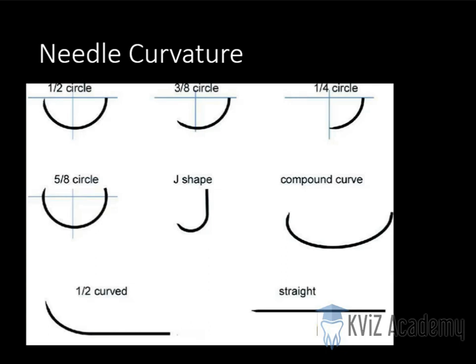I will show you first the types of curvature we have. These are the names: half circle, 3/8 circle, 1/4 circle, 5/8 circle.